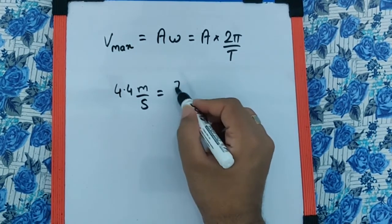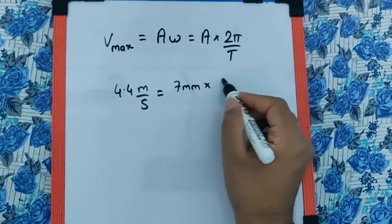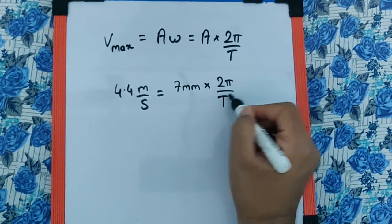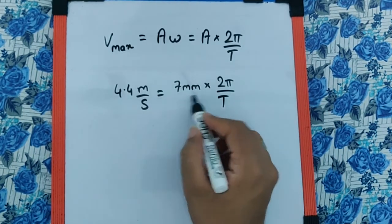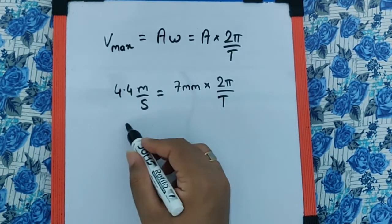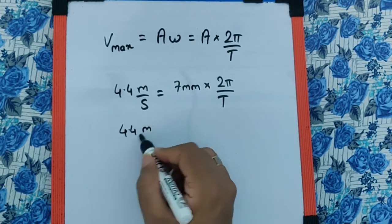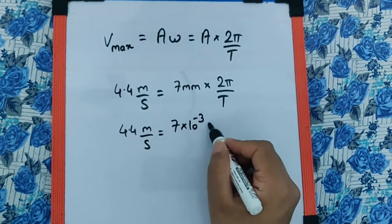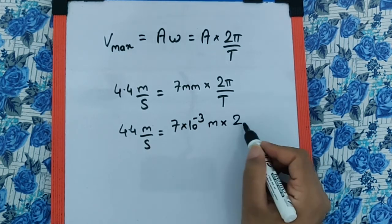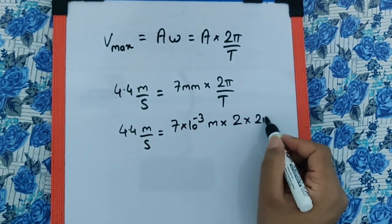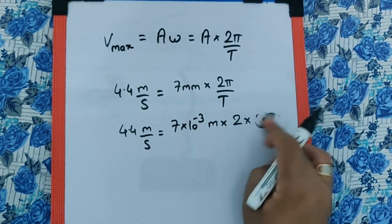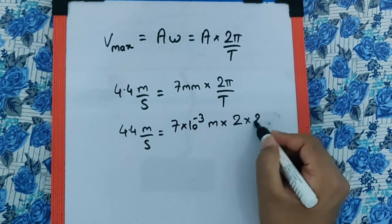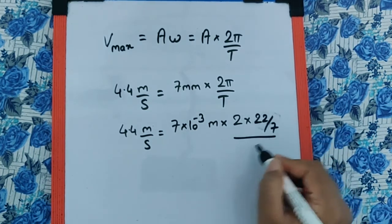We need to convert millimeters to meters, so: 4.4 m/s = 7×10^-3 m × 2π/T. I'm substituting π as 22/7 for ease of calculation.